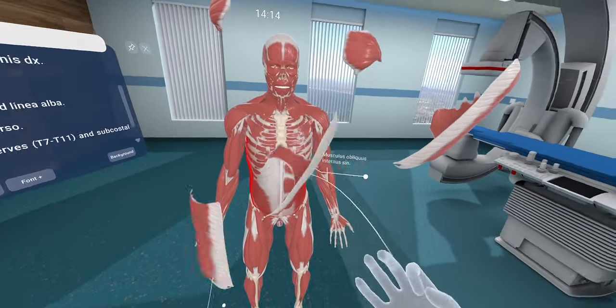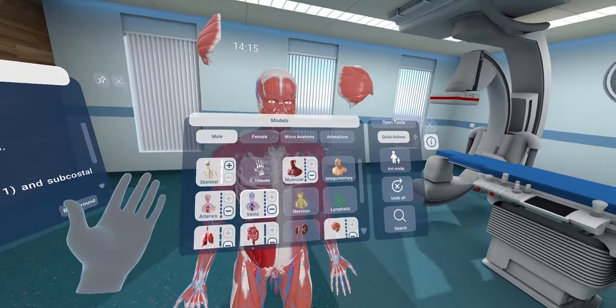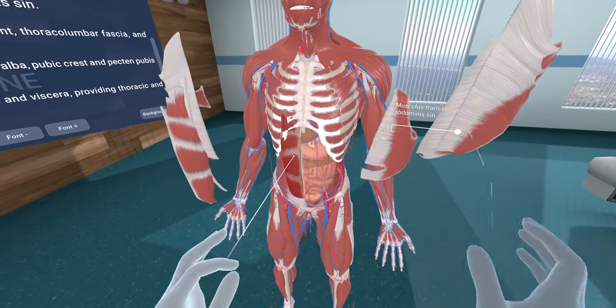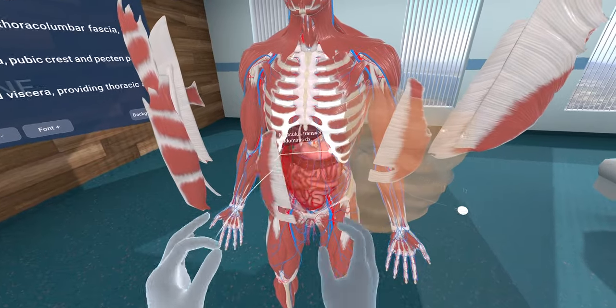Human Anatomy VR provides 14 human body systems with more than 10,000 realistic anatomical structures designed by medical professionals.